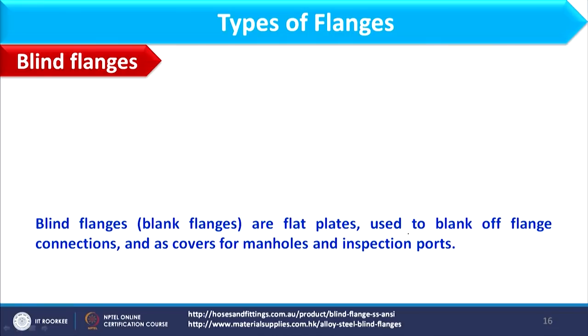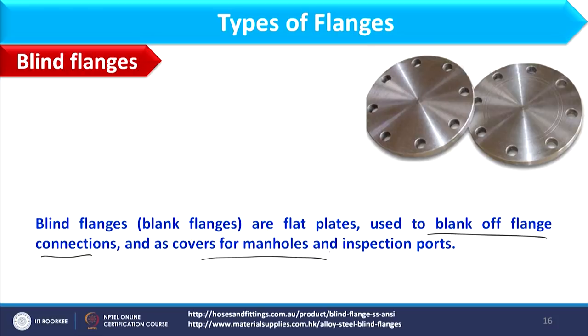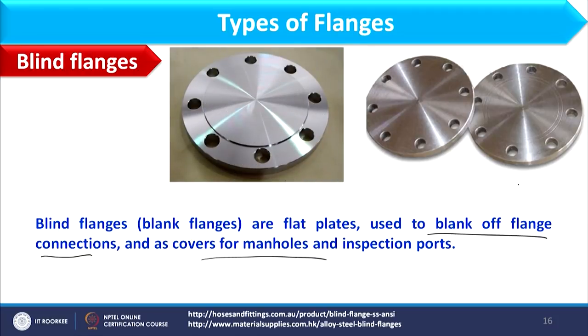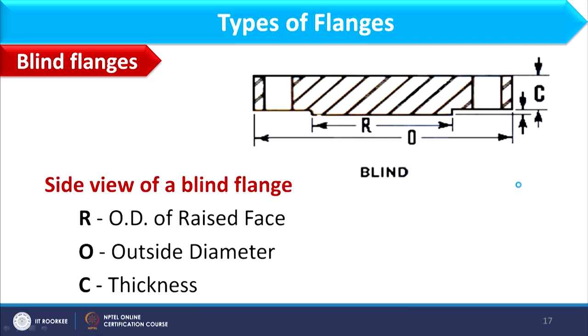Blind flanges do not have a provision for fluid to flow through. They are flat plates used to blank off a flange connection and also serve as covers for manholes and inspection ports. The side view schematic shows the relevant parameters. Across all flange types discussed, there is a parameter R — raised face — which will be explained in detail in a later section.